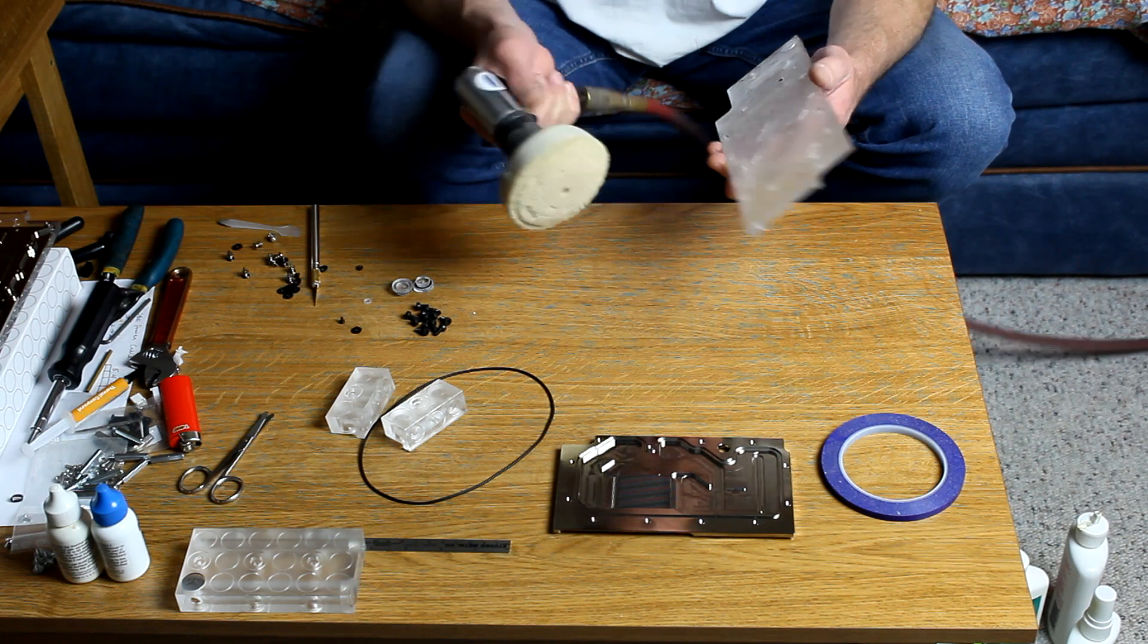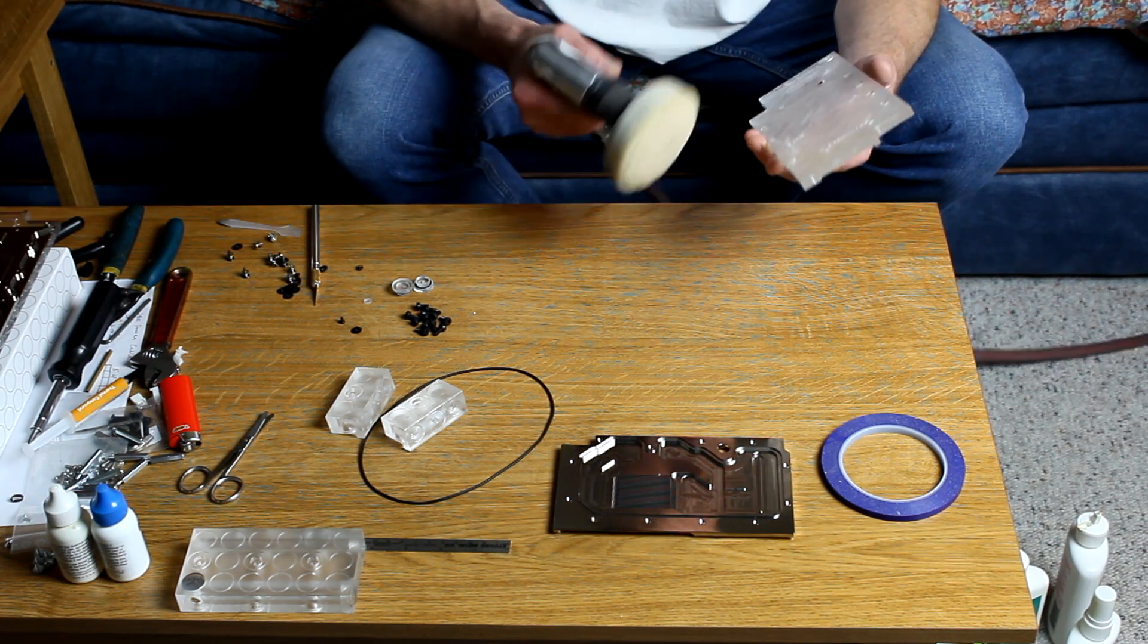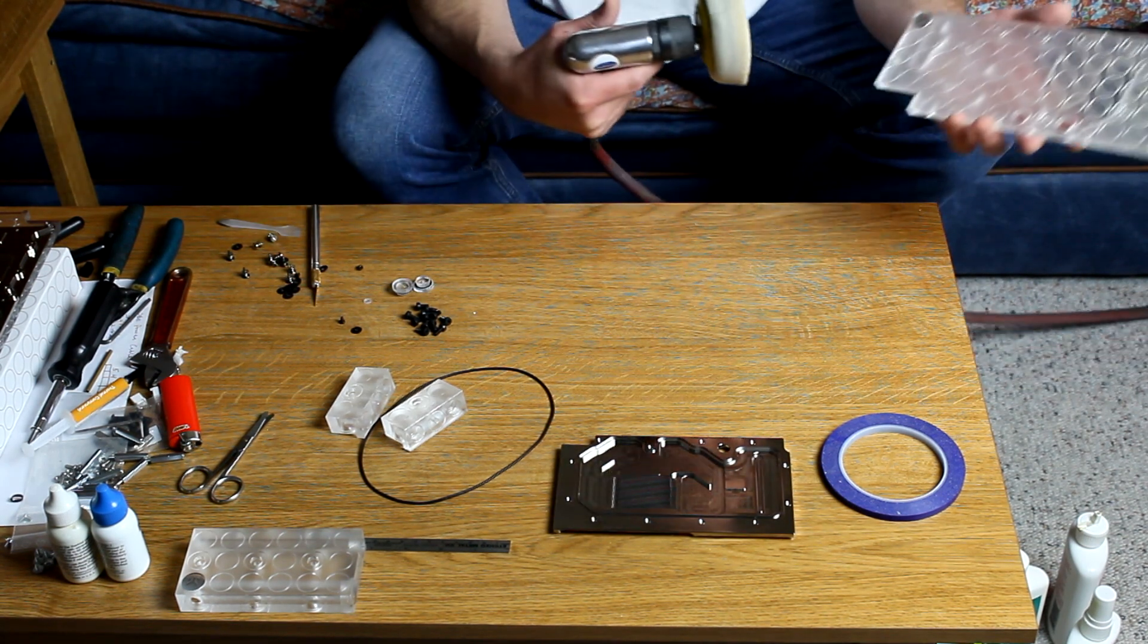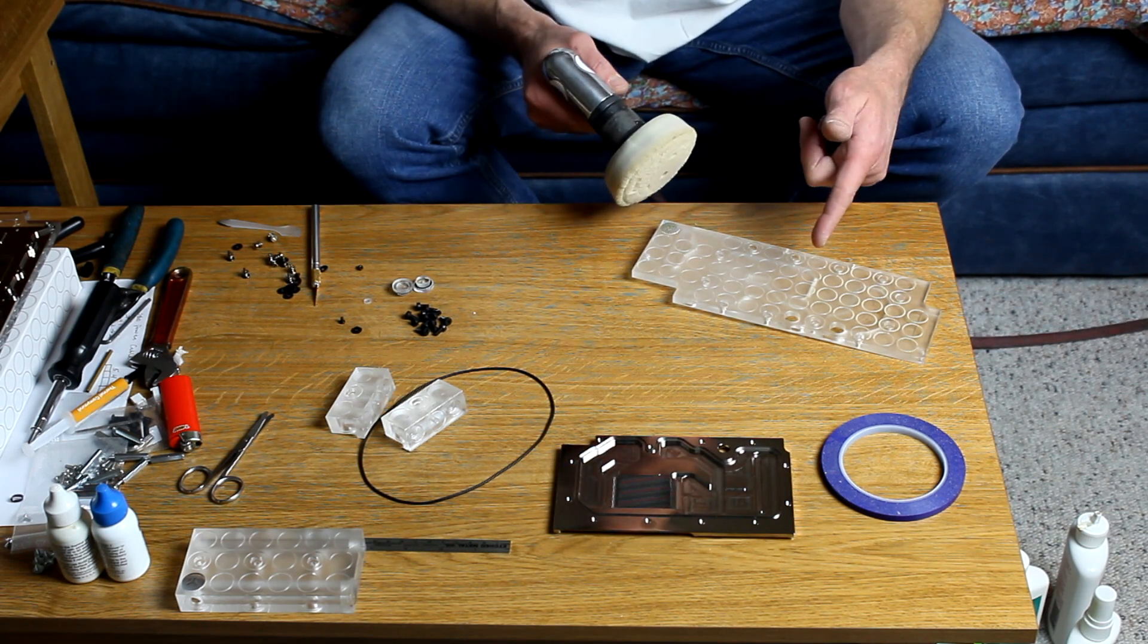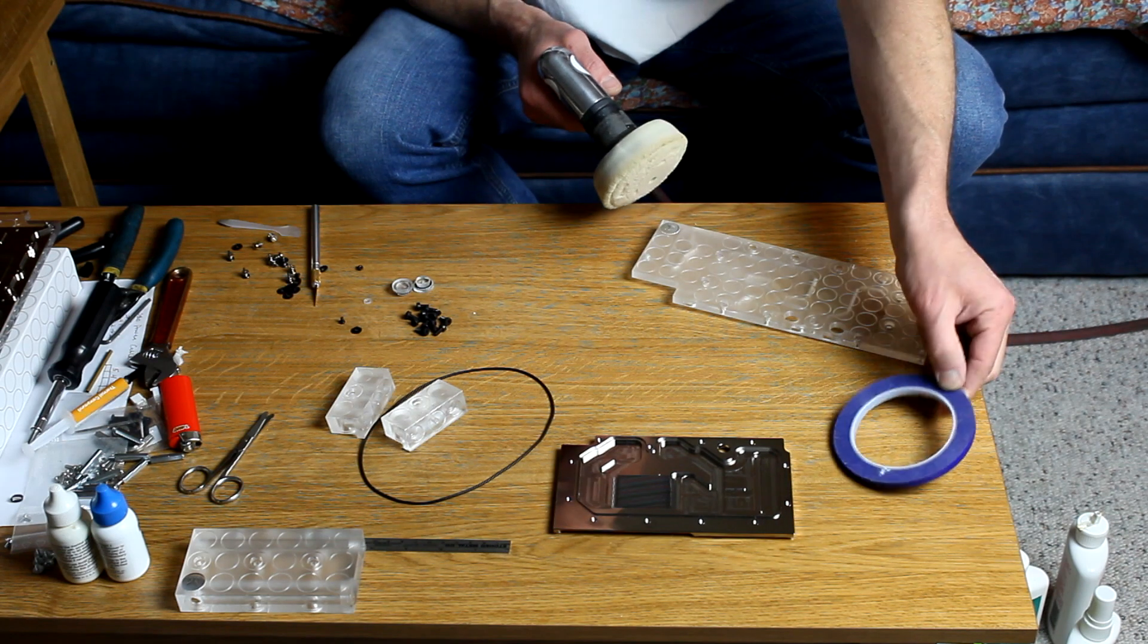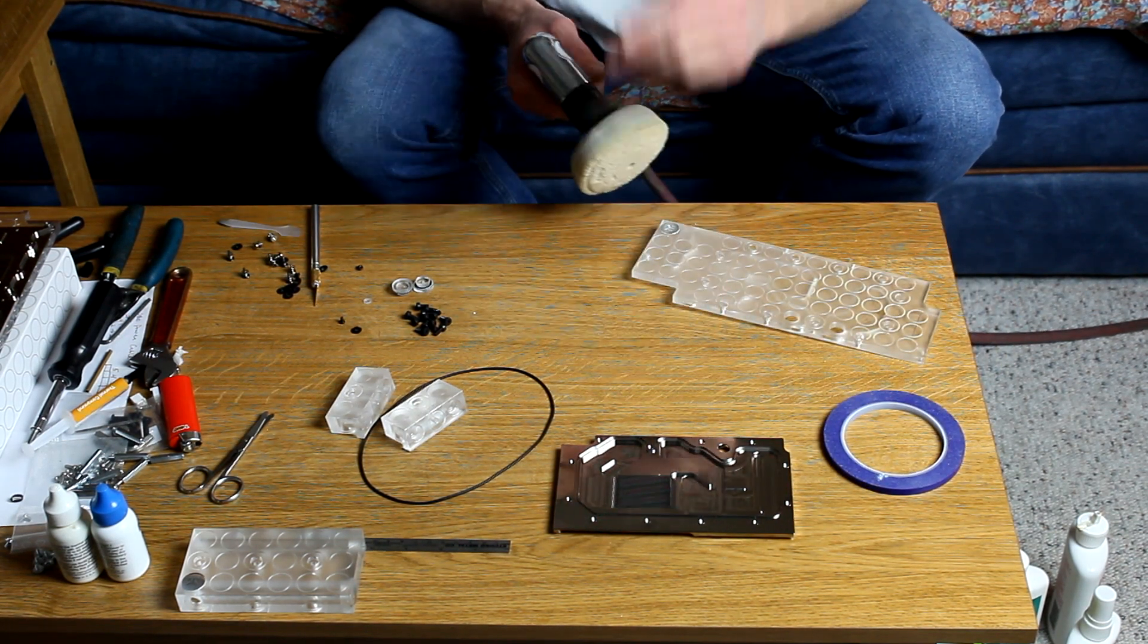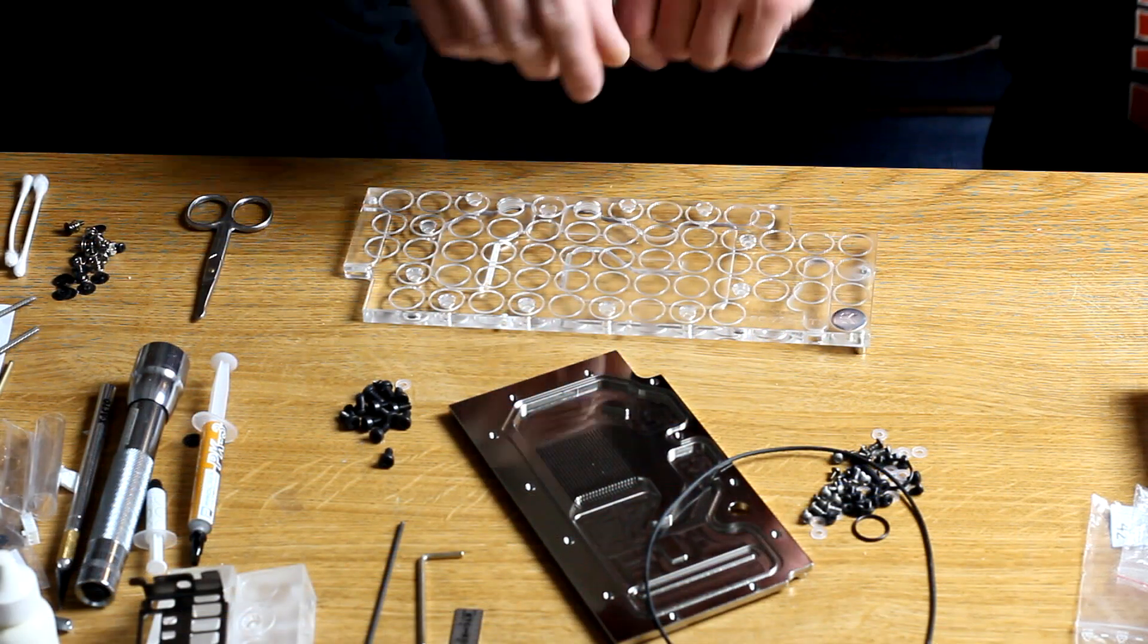As you can see, it doesn't take long with this process. It takes a heck of a lot longer when you're just rubbing on it with a rag, but that does work. This just speeds things up tremendously. We'll get this polished up and then I'll show you guys the trick with the vinyl tape, putting the gasket back on the sink, putting the polished block back on, and we'll go from there.